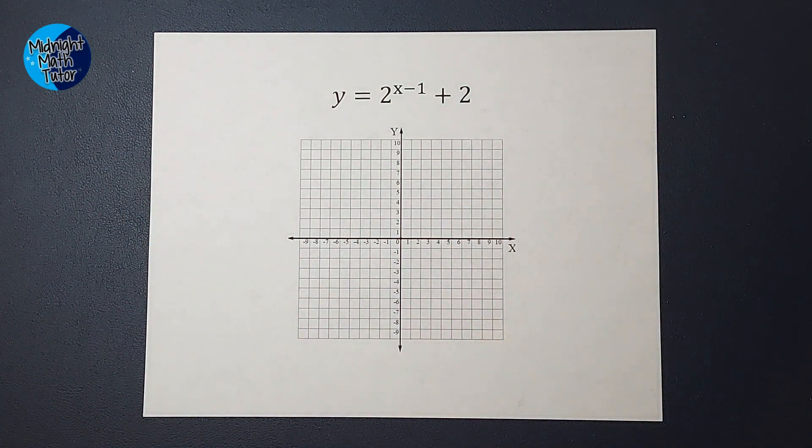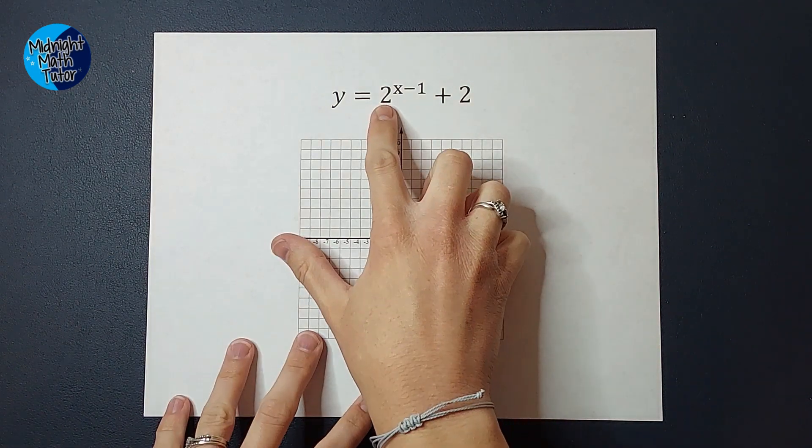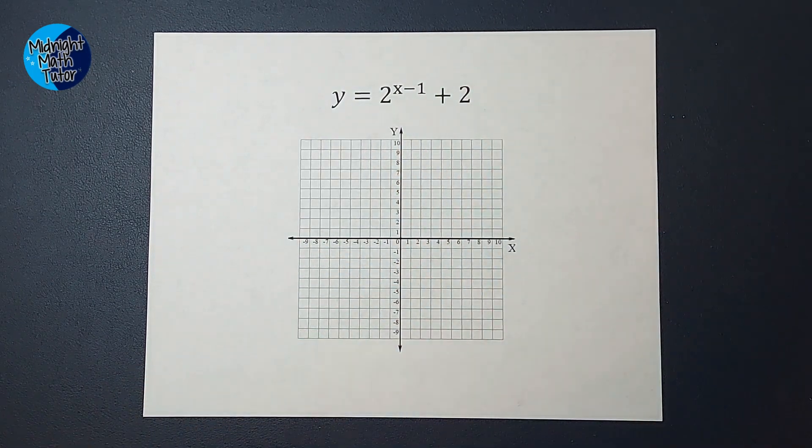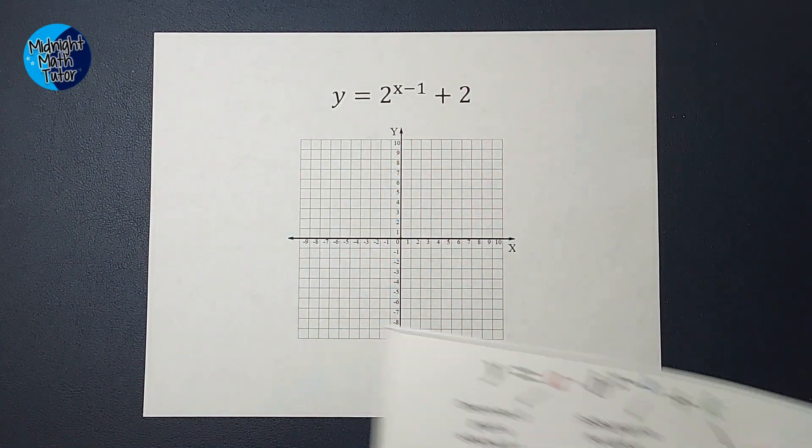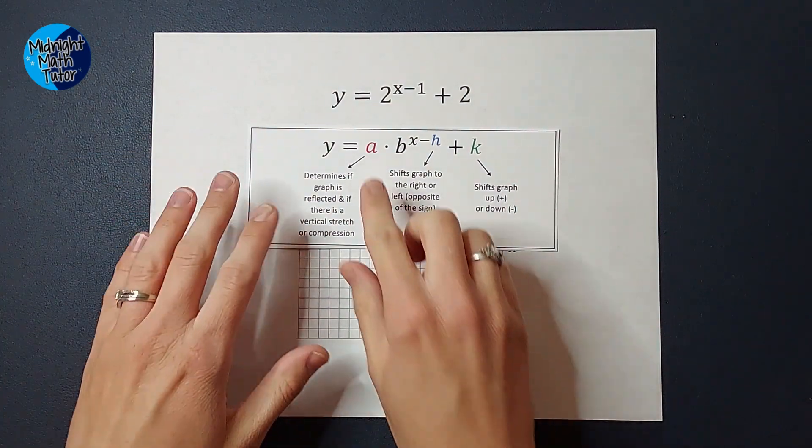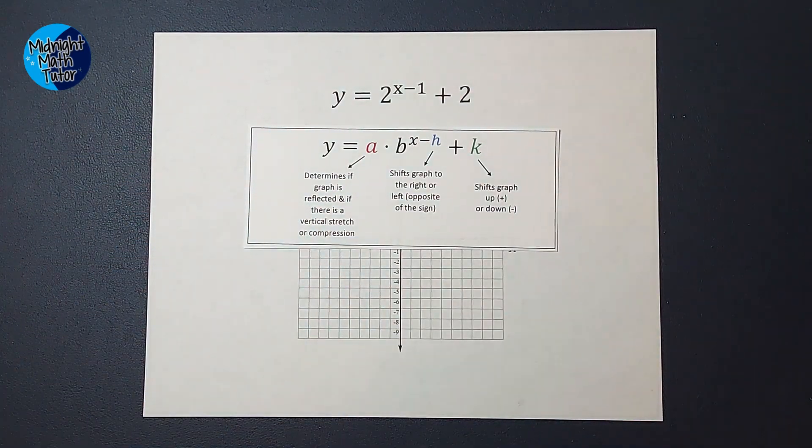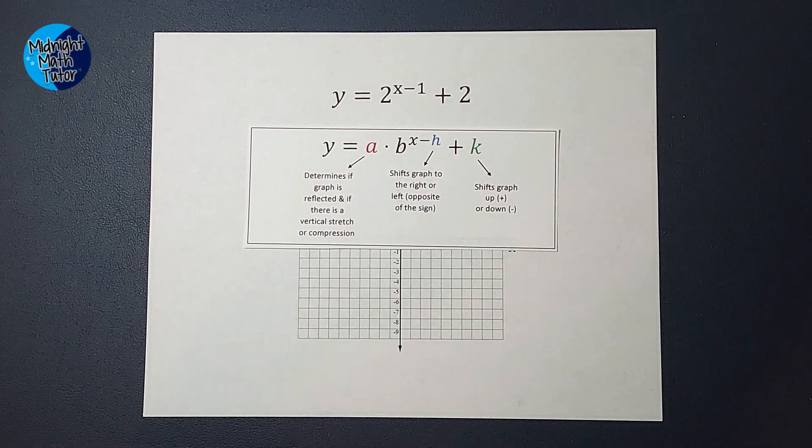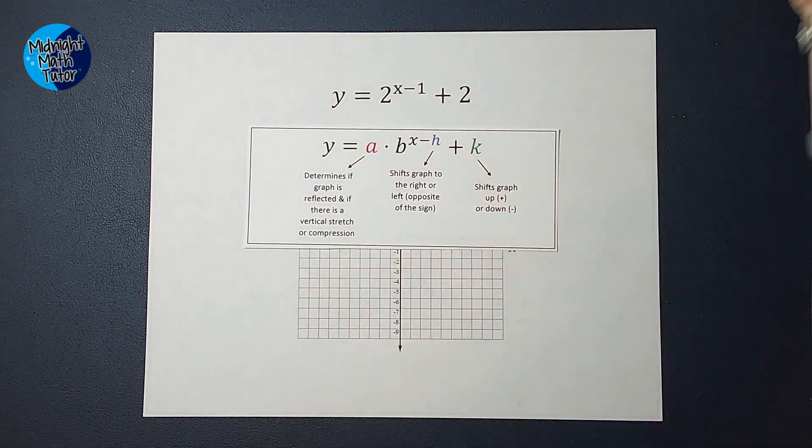The only thing that is different is sometimes my parent graph is going to be a little different depending on what number is right here. So here is my little key. Where you're probably used to this. This number, depending on if it's positive or negative, my graph will go up or down or it might be reflected. It can be a stretch or a shrink.